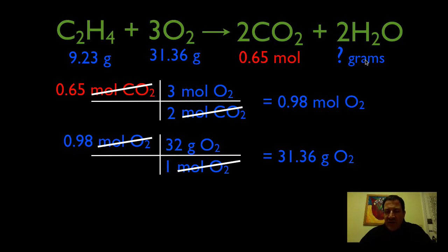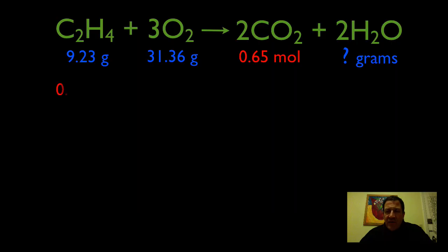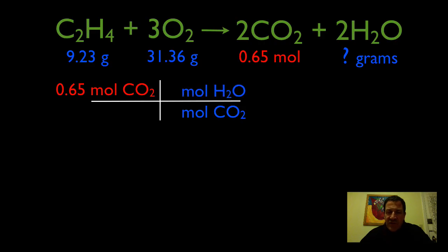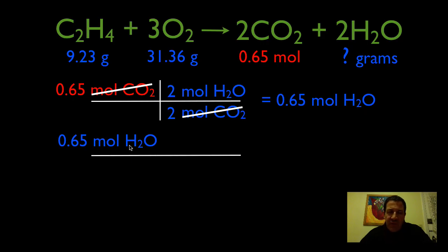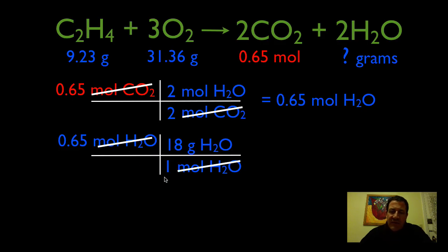We also want to know how many grams of water. Starting with 0.65 moles of CO2, we use the molar ratio to switch into moles of H2O. It's a 2 to 2, or 1 to 1 ratio, so 0.65 times 2 divided by 2 gives the same number of moles: 0.65. Then we use 1 mole of H2O equals 18 grams — the molar mass — putting moles on the bottom to cancel, giving us 11.7 grams of H2O.